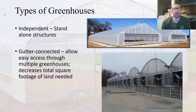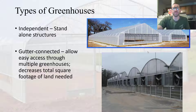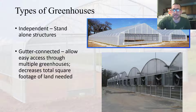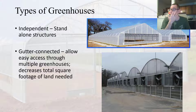We have different types of greenhouses. We have independent ones — standalone structures. You can have two independent ones, or they can be connected, which allows for easy access through the greenhouses. This would be a single span, and this would be multiple spans — something to consider when we look at our lab.